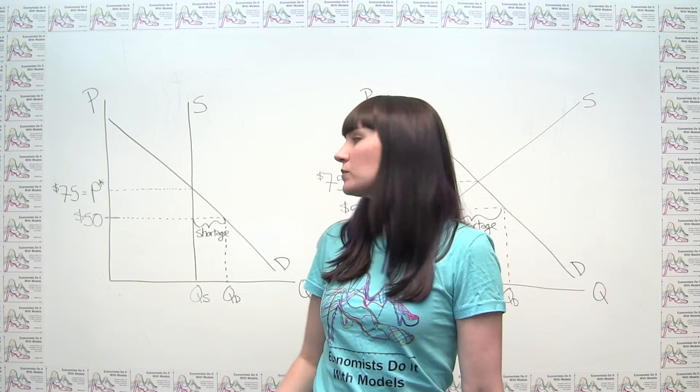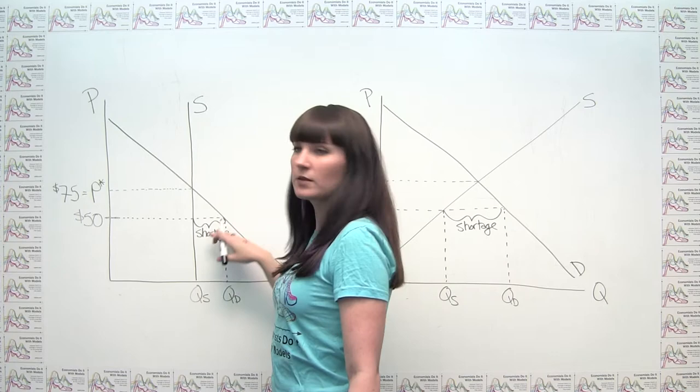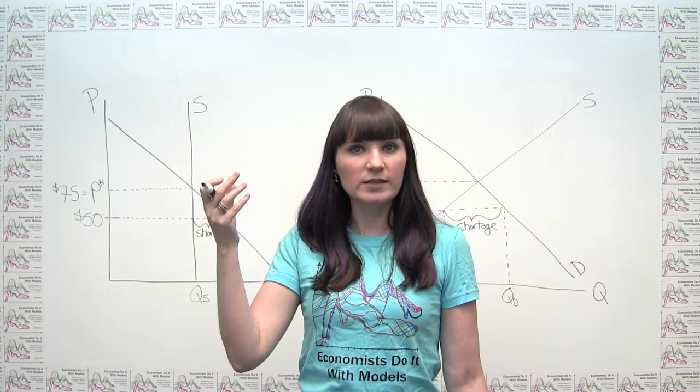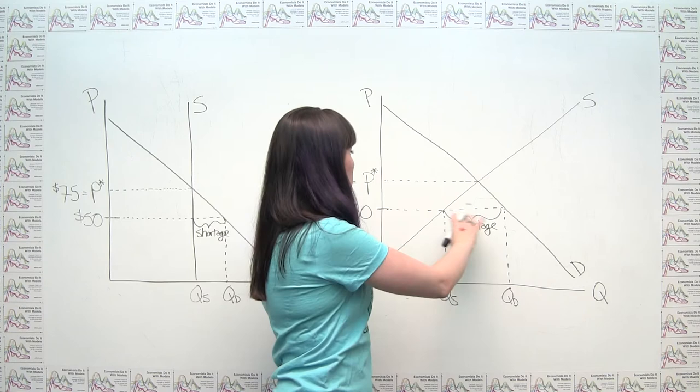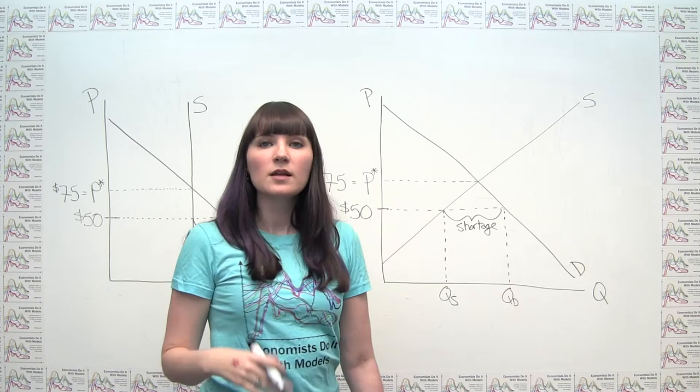And this shortage becomes particularly interesting because ticket sales are one place where we have pretty well-developed, well-functioning secondary markets. And by secondary markets, I mean StubHub, for example. So what's likely to happen is not necessarily that the price is lowered to $50 and some people get the tickets and then others are left out in the cold. What's likely to happen is that at least some of these tickets that are bought at a price of $50 are put up on websites for secondary markets and sold at higher prices.